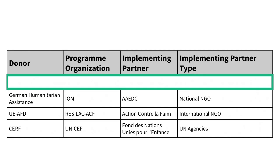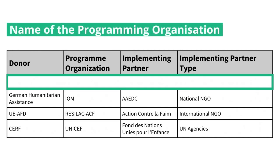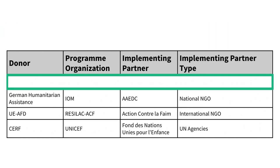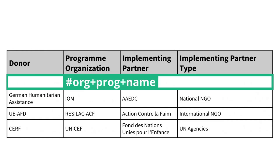Next, we have a column with the name of the programming organization, where the same applies. You can either use hashtag org plus prog, or hashtag org plus prog plus name. Again, both are correct, but the latter is slightly more precise.